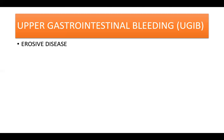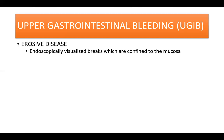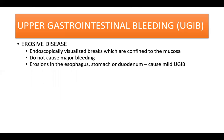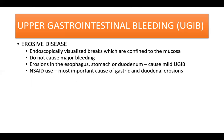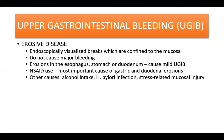In erosive disease, erosions are endoscopically visualized breaks which are confined to the mucosa and do not cause major bleeding due to the absence of arteries and veins in the mucosa. Erosions in the esophagus, stomach, or duodenum commonly cause mild upper GI bleeding. The most important cause of gastric and duodenal erosions is NSAID use. Other causes of gastric erosions include alcohol intake, H. pylori infection, and stress-related injury.